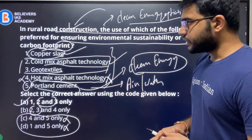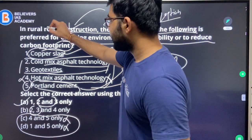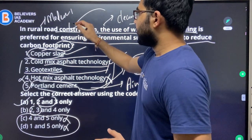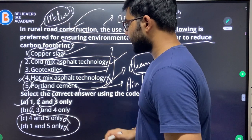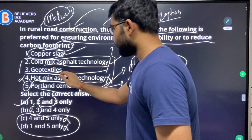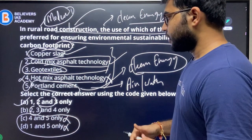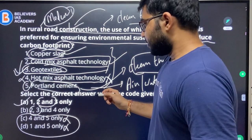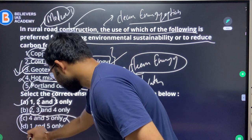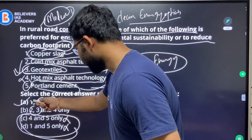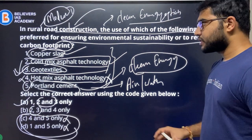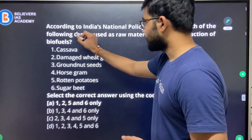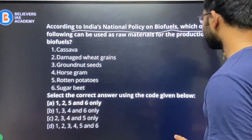By using elimination and intelligent guessing, we derive the answer: one, two, and three — option A. I would say this is a moderate question; the previous four were very easy, this one is moderate. But you can still arrive at the correct answer even if you have only partially read about environment or newspapers. Geotextile is a clean energy option; using that, you can also confirm the answer. All these techniques work together.